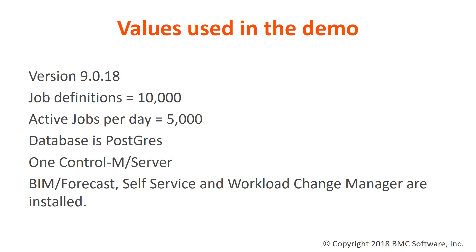For today's demo, we're going to use version 9.18. We're going to have 10,000 job definitions and 5,000 active jobs a day using a Postgres database, only one Control-M server. BIM, forecast, self-service, and change manager are all installed. So let's run the numbers and see what kind of values we get.